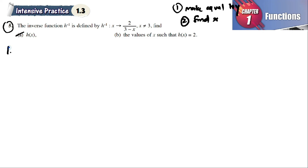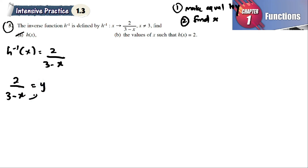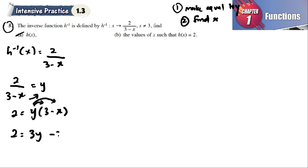Now h inverse of x is equal to 2 divided by (3 minus x). We make it equal to y, so 2 divided by (3 minus x) equals y. Then 2 equals y times (3 minus x), and expanding: 2 equals 3y minus xy.